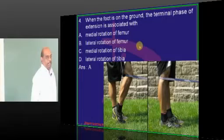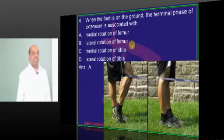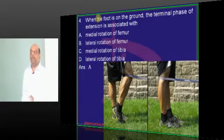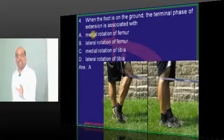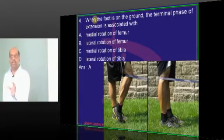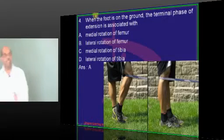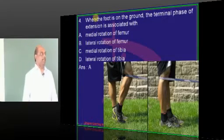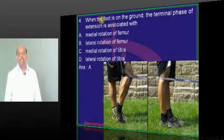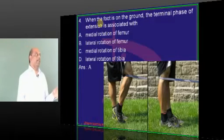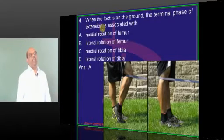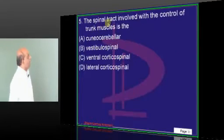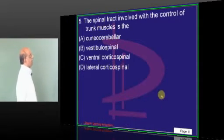Many questions come on popliteus function, origin and insertion of popliteus, menisci, and cruciate ligaments. Everything on the anatomy of the knee joint — you need to be quite sure about it.